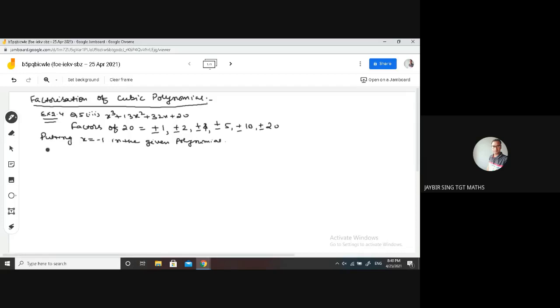This will be, then we will be getting remainder is equals to, just put x is equals to minus 1. So minus 1 cube plus 13 into minus 1 square plus 32 into minus 1 plus 20. Minus 1 cube, this is minus 1. Minus 1 square, this is plus 1 and plus 1 into plus 13. This is plus 13. Now you can see this is negative and this is negative. It means it will be negative 33 plus 20 plus 13. This is 33. So it will be 0.